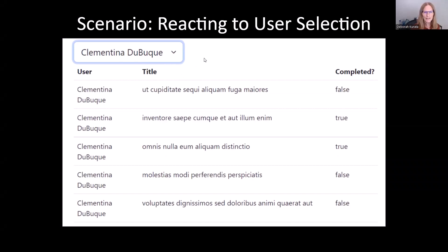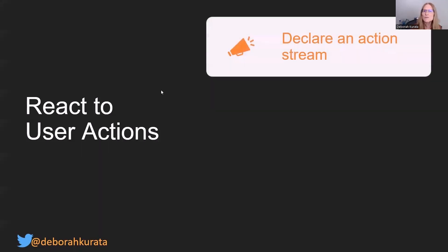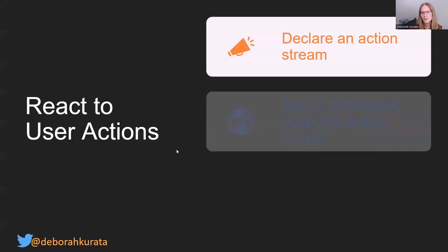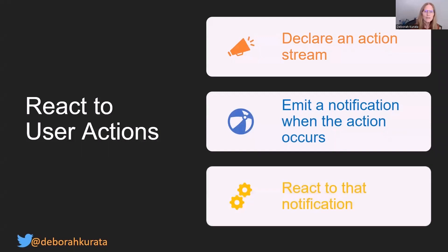So how are we going to do that? We want to be able to react to actions. So as you, the user of this application, pick a different user from the list, you can react to that. We first start by declaring an action stream, then we emit a notification when that action occurs, and we react to that notification.